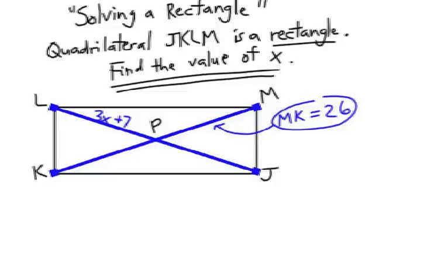First thing we need to think of is, how can we write my equation? Well, the entire diagonal 26, which is MK, is two of those LP diagonal parts.